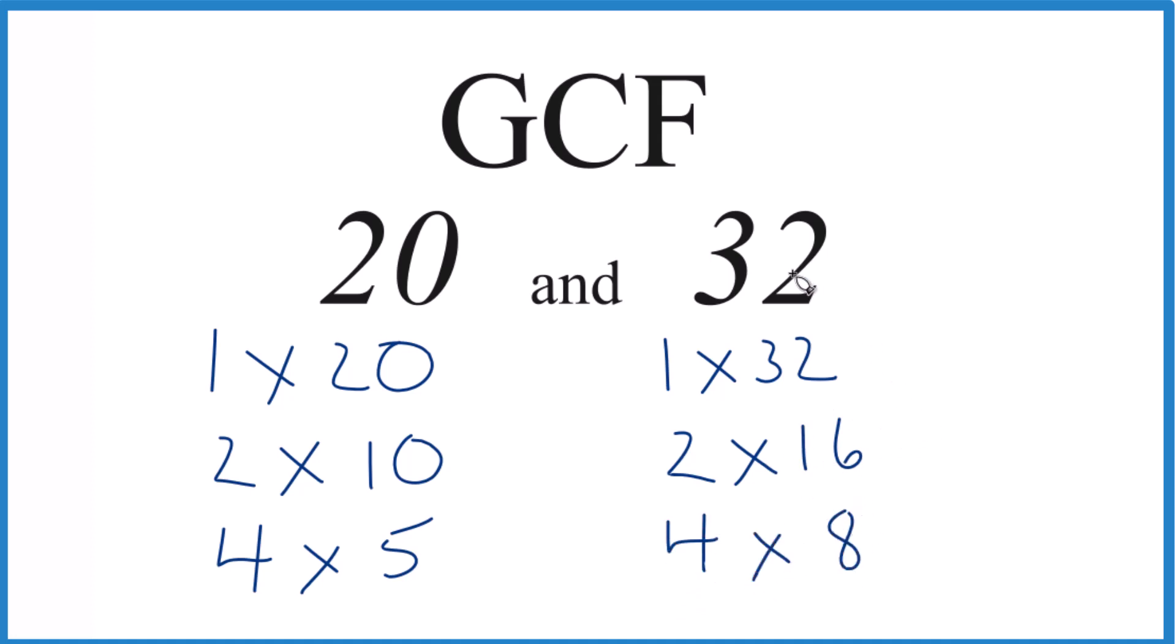Now we'll look for the common factors. 1 and 1 over here - they both go into these numbers. 2 goes into 20, 2 goes into 32 - those are common.